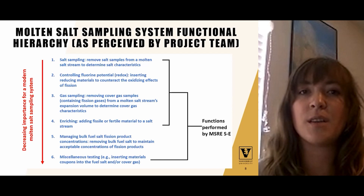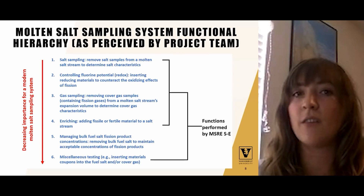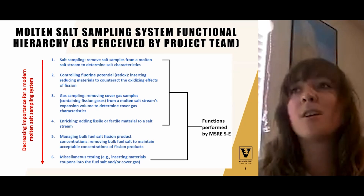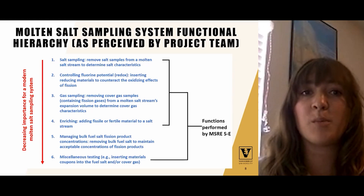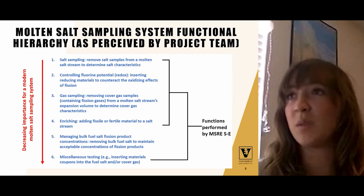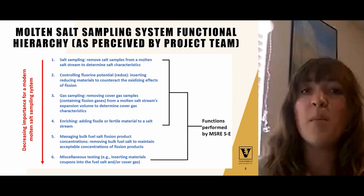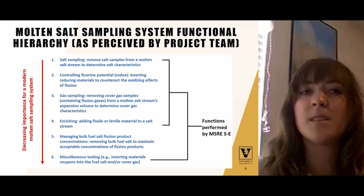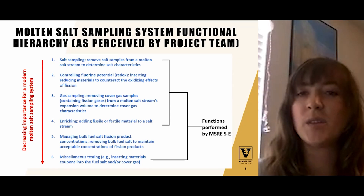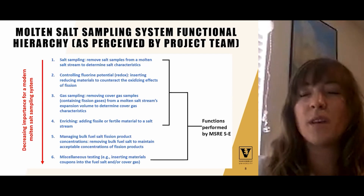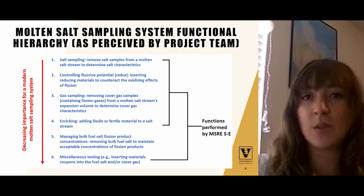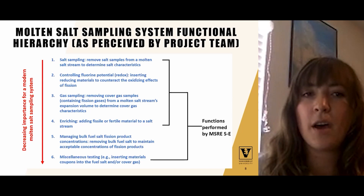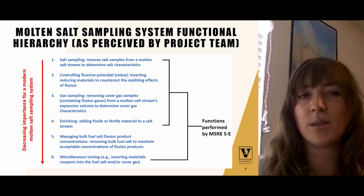We listed these in an order of preferential inclusion, based on the MSRE sampler-enricher's functions as well as our understanding of modern MSR safety, operability, and salt sustainability expectations. Some functions are similar to those of the MSRE sampler-enricher — most importantly salt sampling itself — but also adding enriching material back into the salt stream. Secondary functions we considered include removing cover gas samples, inserting beryllium metal or material coupons into the salt, and removing bulk quantities of fuel salt to maintain acceptable fission product concentrations.